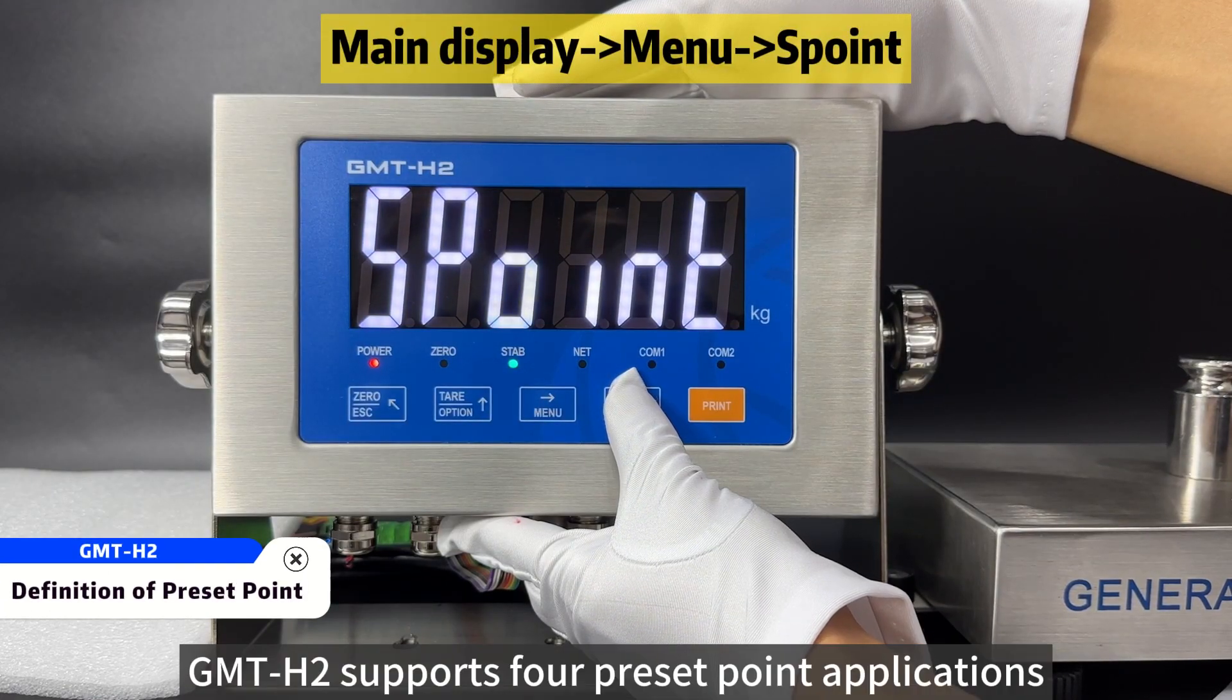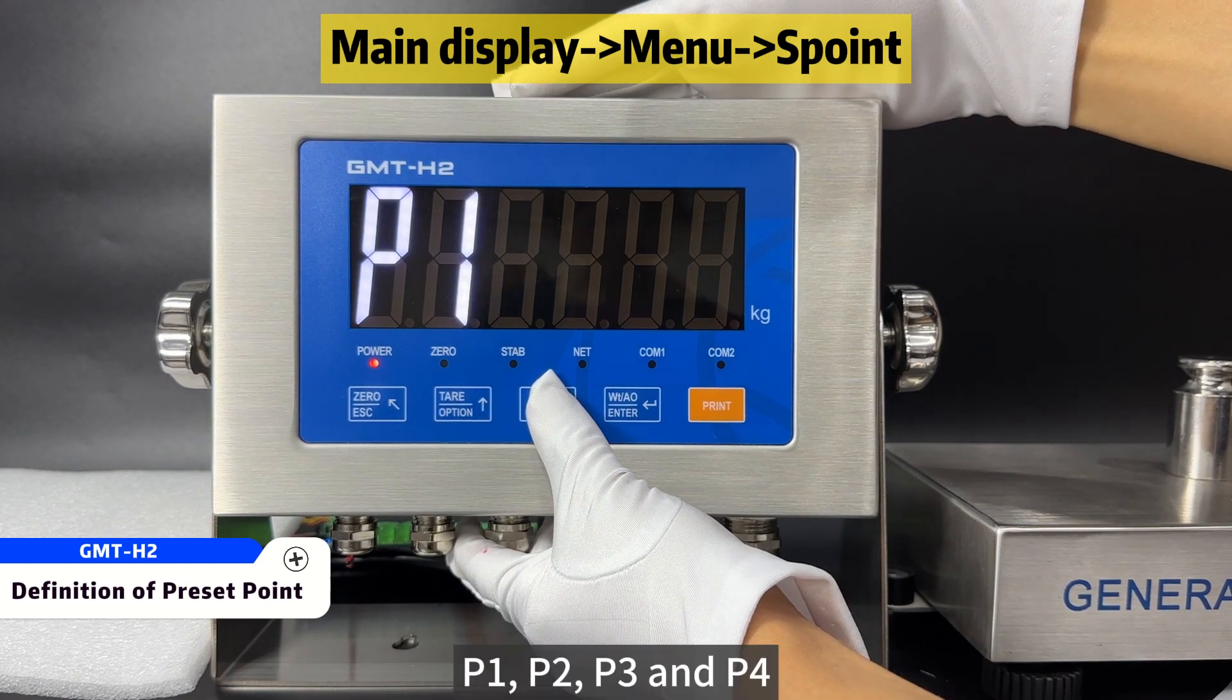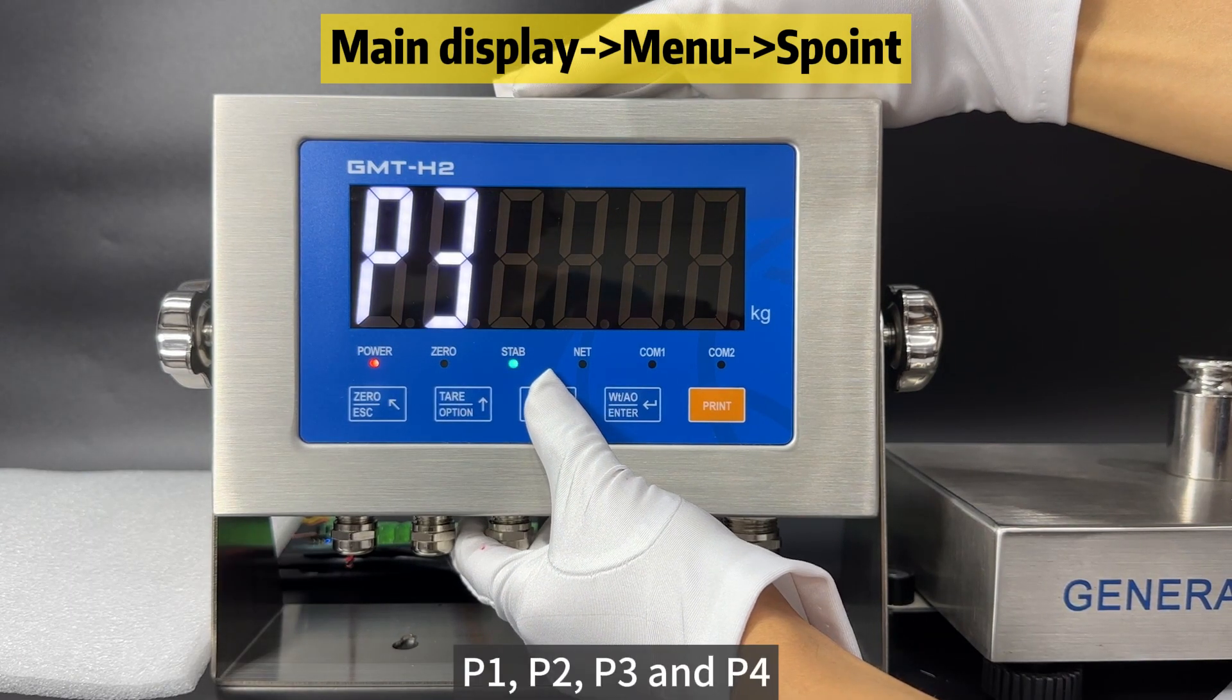GMT-H2 supports four preset point applications: P1, P2, P3, and P4.